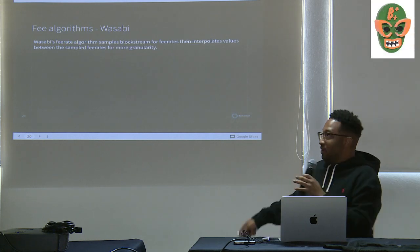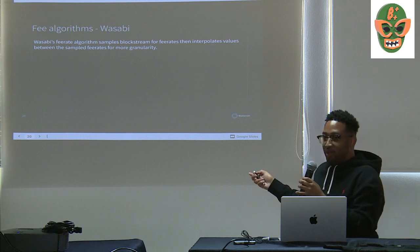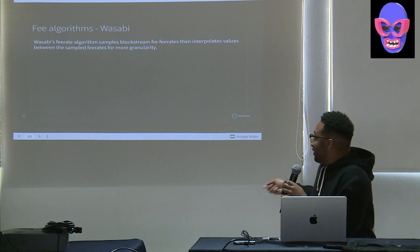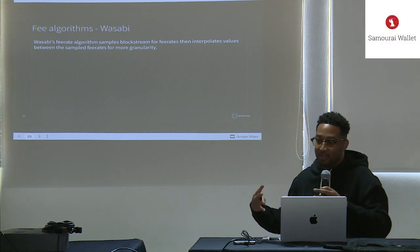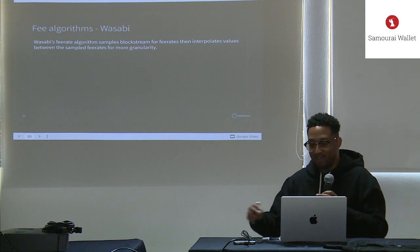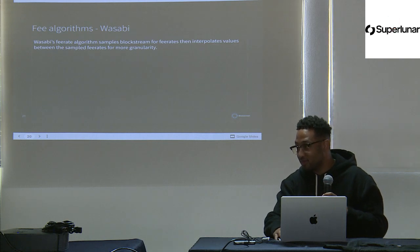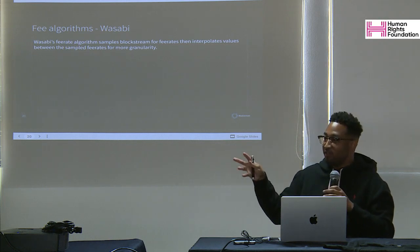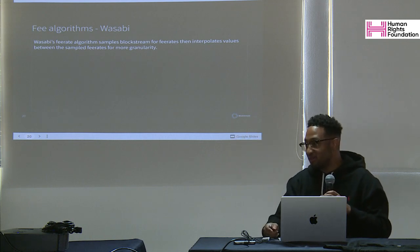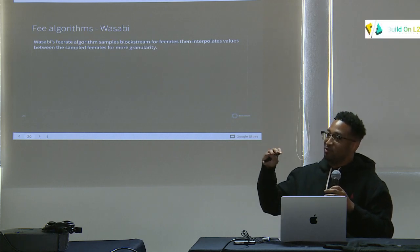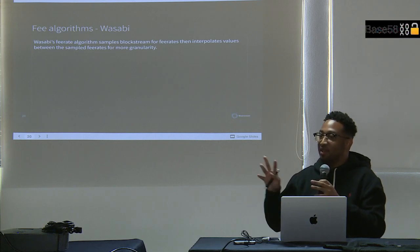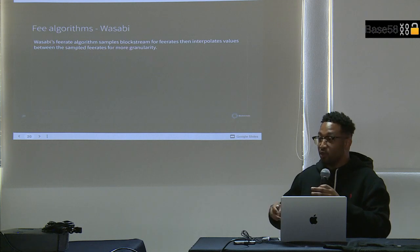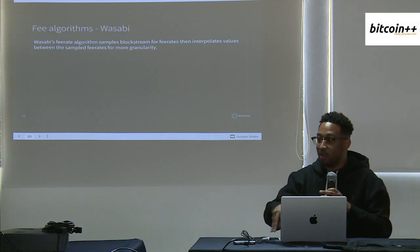Looking at Wasabi's fee rate algorithm: Wasabi can also source fee rates from your Bitcoin Core node — they're very flexible. One of the fee rate providers is the Blockstream fee rate provider. Their algorithm samples from Blockstream's fee rate API, which returns a JSON with fee rates for predefined block confirmation targets. You can choose a block target — like ten blocks — and get a fee rate to get confirmed within that window.